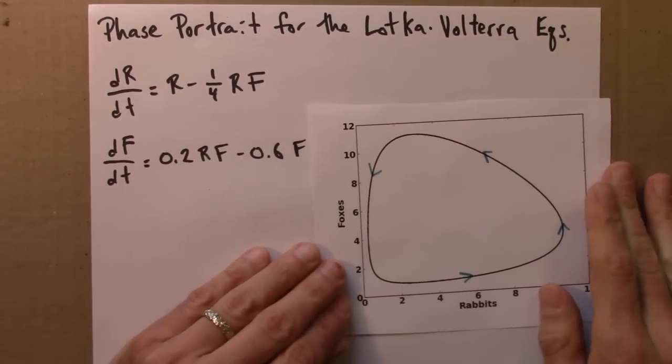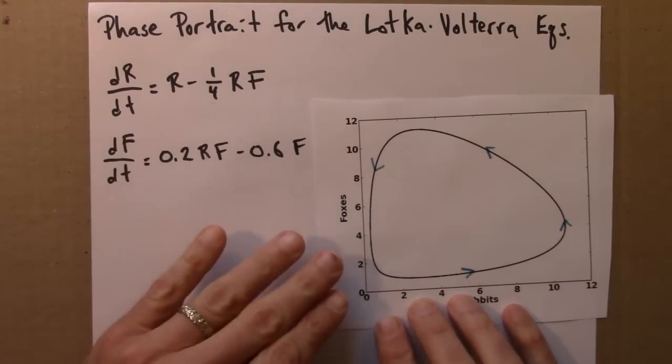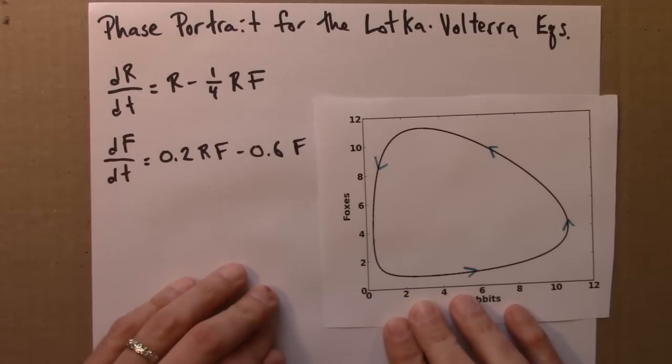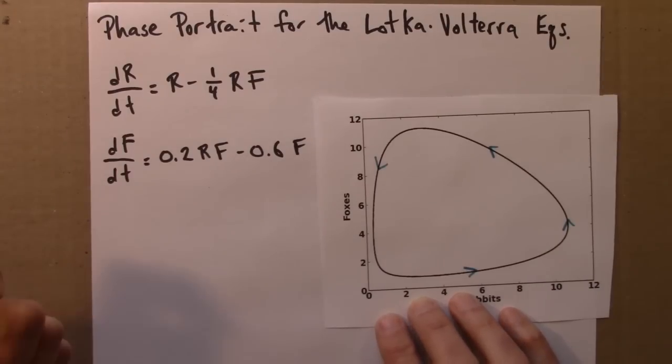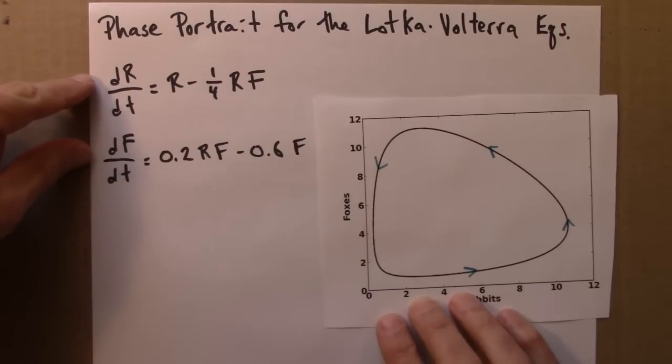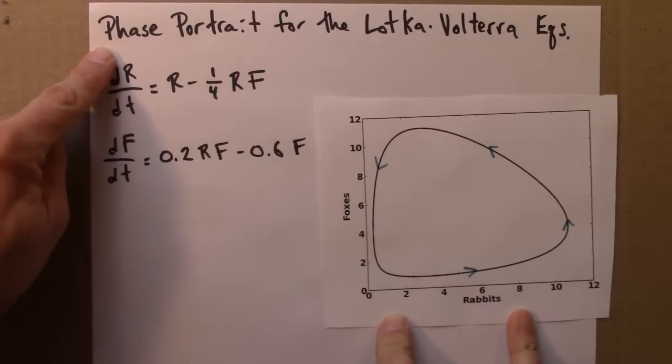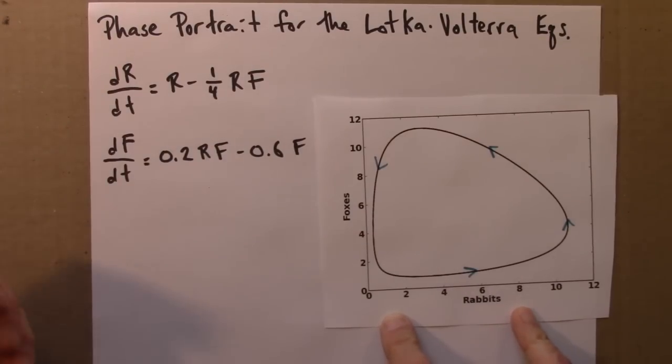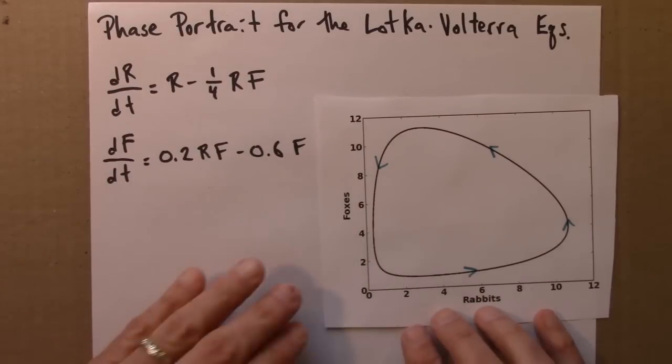What about the Lotka-Volterra equation? We saw there that populations behaved cyclically, cycled around. Are these cycles stable or unstable or something else? So we'll figure this out experimentally. As usual, when we want to test something's stability, we try iterating or in this case solving the differential equation for slightly different initial conditions. And when one does that on a phase plane, one often ends up with what's called a phase portrait. So perhaps like a portrait in art, it summarizes or highlights the key features, key qualitative features of a system.